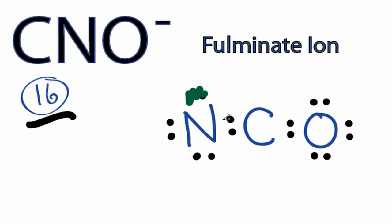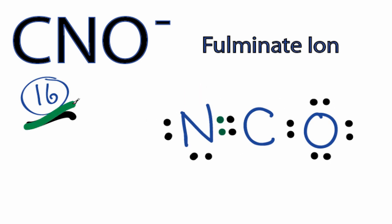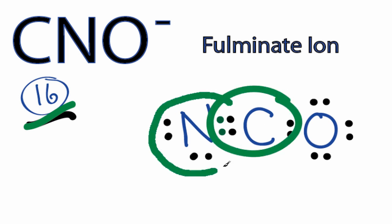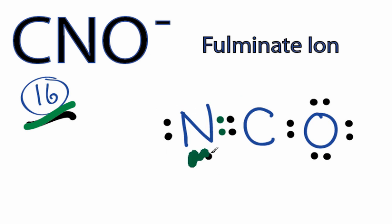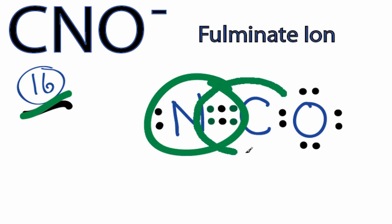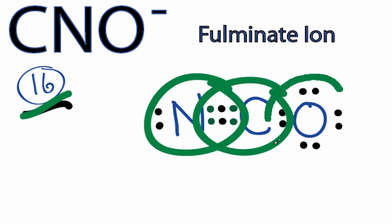Let's share these two here from the nitrogen with the carbon. We're still using 16 valence electrons, but now carbon has six. Nitrogen still has eight. Let's move two more here and share it with the carbon again, forming a triple bond. Now the nitrogen has eight still, but the carbon has eight as well.